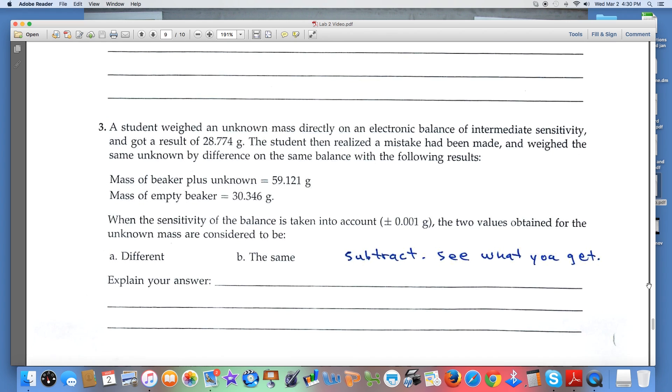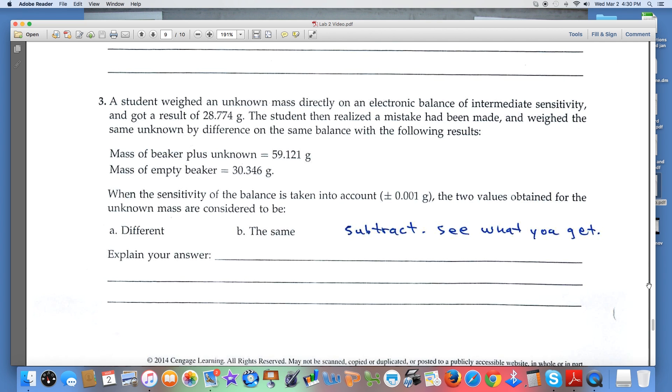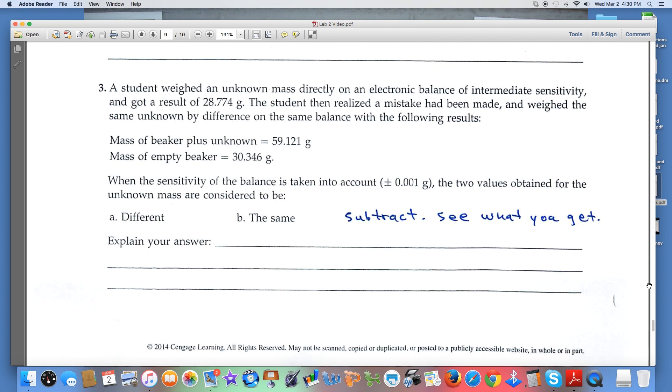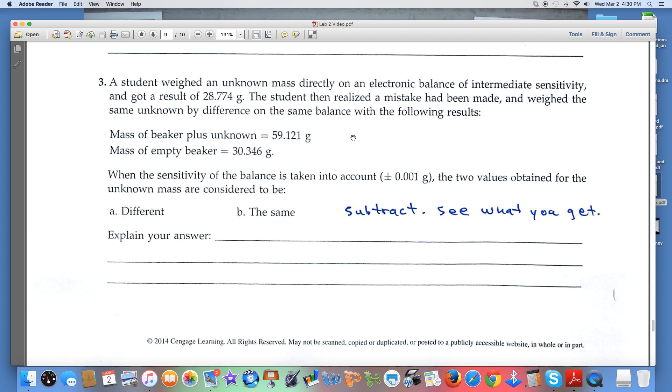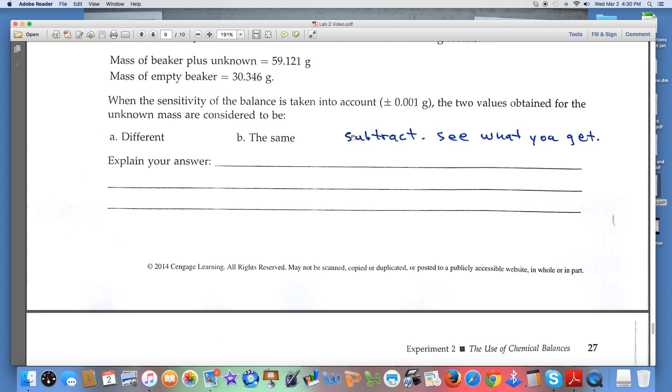Number three: we weighed something directly on an electronic balance, got a certain value, then weighed by difference. Then we're asked questions about these two results. This is one of those questions where you want to get your pencil going, see what the difference between those two numbers really is, and then you'll be in a better position to answer the question.